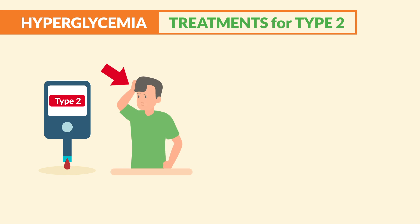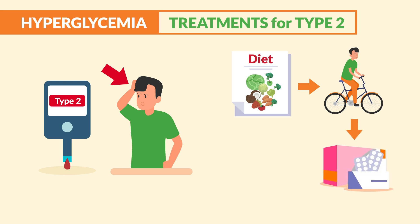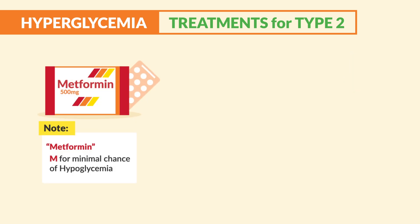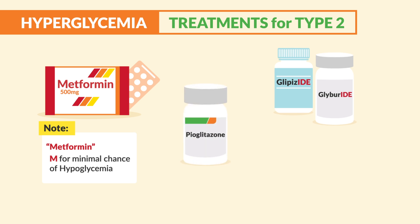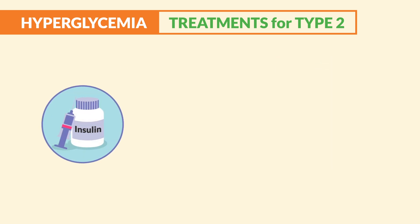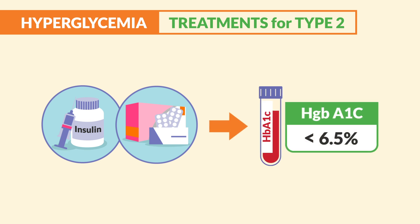For type 2, the first treatment is to fix your habits — we always want to focus on diet and exercise first. Then we give oral medications, and very lastly insulin as a last resort. The four oral antidiabetic drugs to know are: metformin, glipizide and glyburide, pioglitazone and TZD, and acarbose and Precose. Whether we're using insulin or oral diabetic agents, we're simply aiming for a lower hemoglobin A1c level — less than 6.5 for blood sugar control.